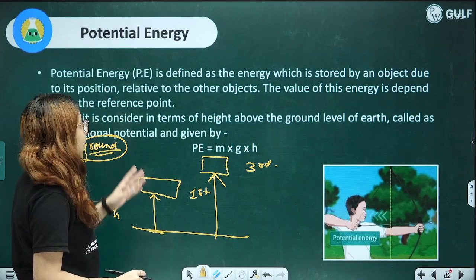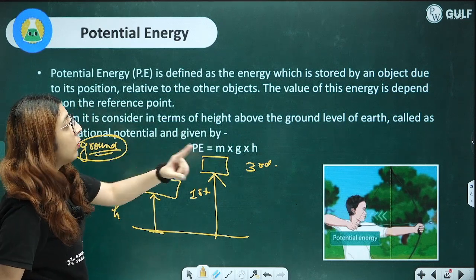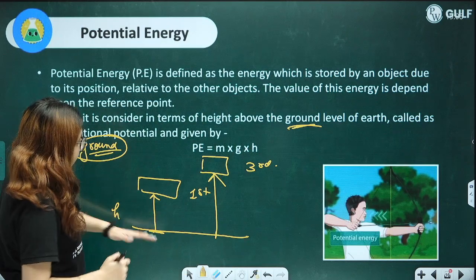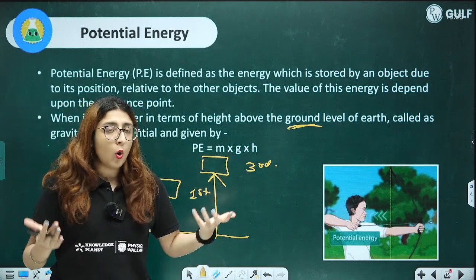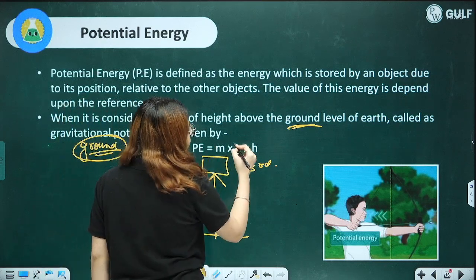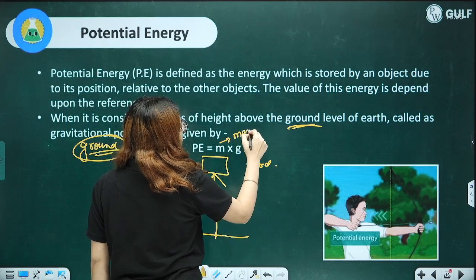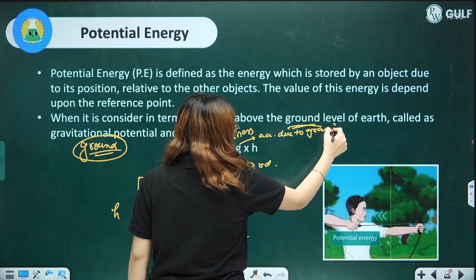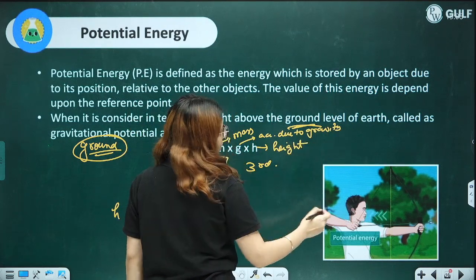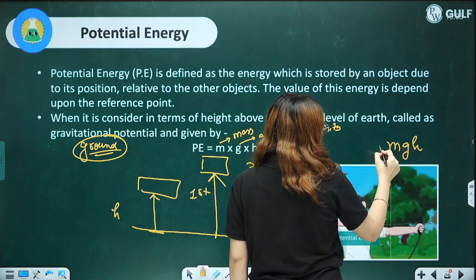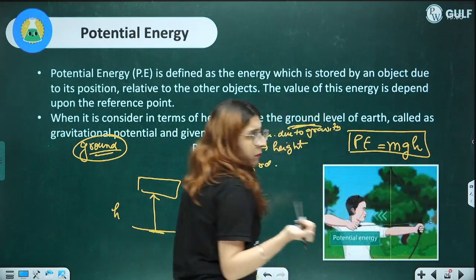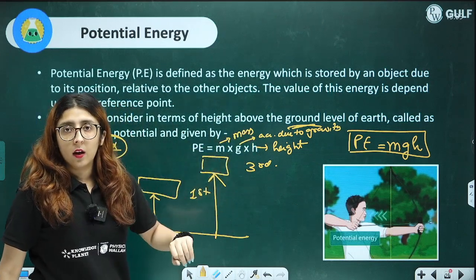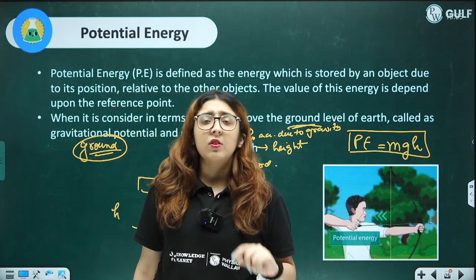When considered in terms of height above ground level, this is called gravitational potential energy. The formula is: PE = mass × acceleration due to gravity × height, or simply PE = mgh. The SI unit is Joule. Potential energy depends on mass and height — more mass or greater height means more potential energy.